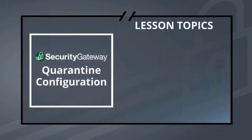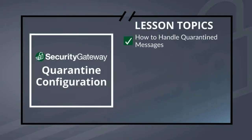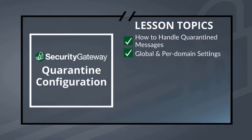In this lesson on quarantine configuration in Security Gateway, we're going to talk about the following topics: what to do with quarantined messages, such as whether to hold them on the server or allow the mail server to filter out quarantined messages; global and per-domain settings; and user permissions, including whether to allow users to view and manage their own quarantine folders or to allow users to manage their own quarantine settings.